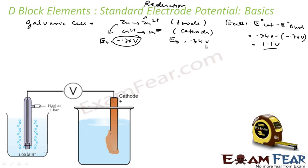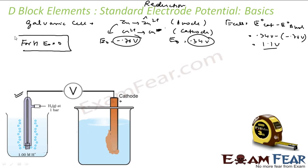These values — 0.34 volt and minus 0.76 volt — are with respect to hydrogen. When we talk about standard electrode potentials, we have to talk with respect to something. Chemists decided to take hydrogen and assume that E° for hydrogen is 0. This is an assumed value, and with respect to this, all other E° values are formed. To find them, we take a hydrogen electrode as the anode and pair it with a cathode.